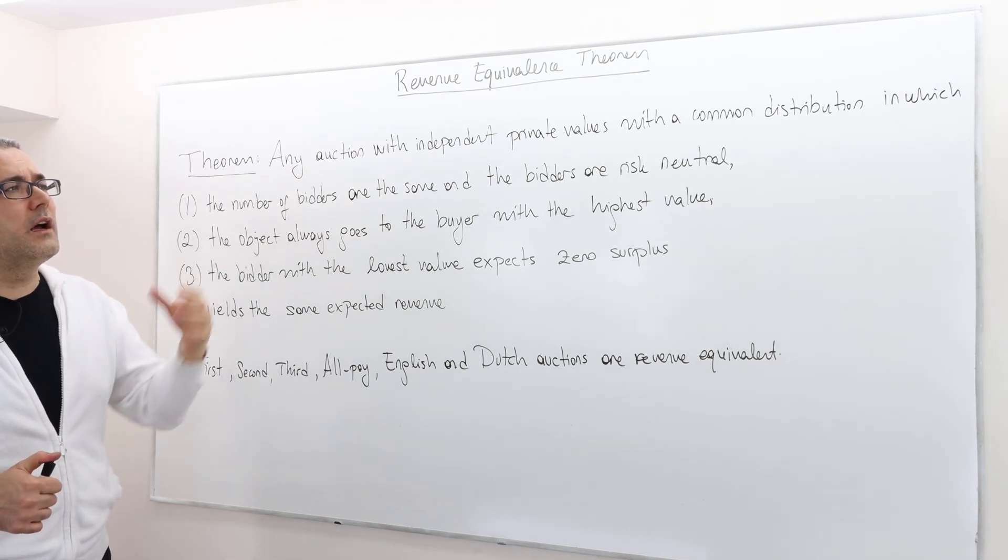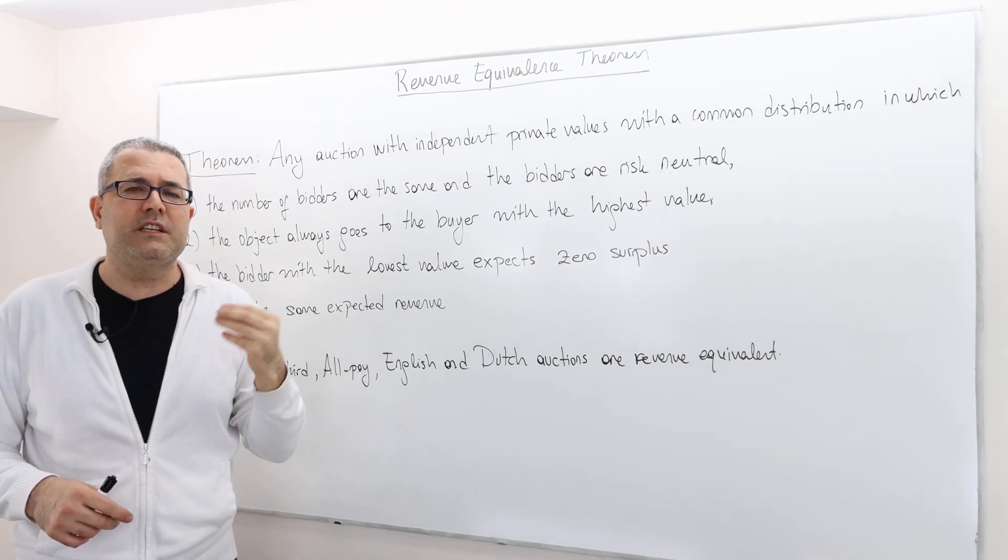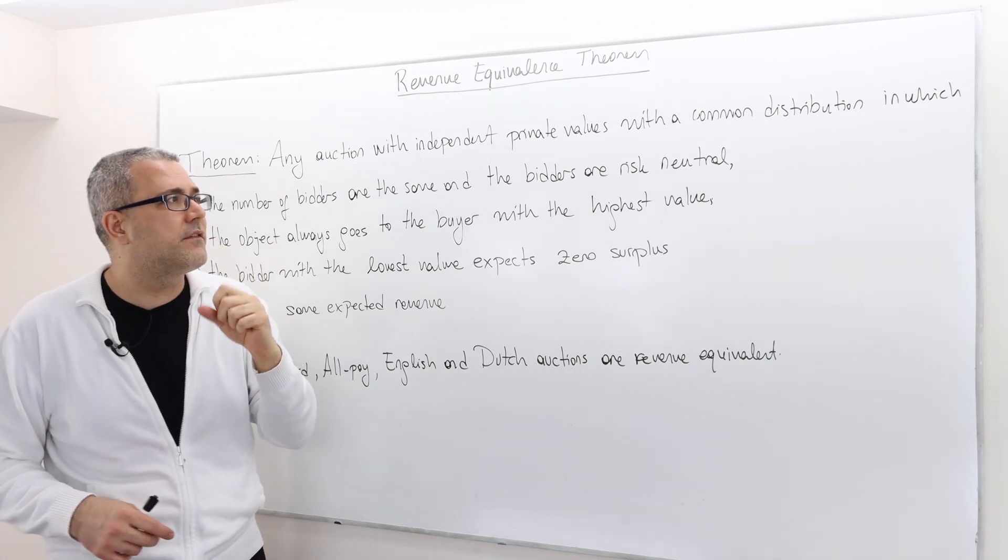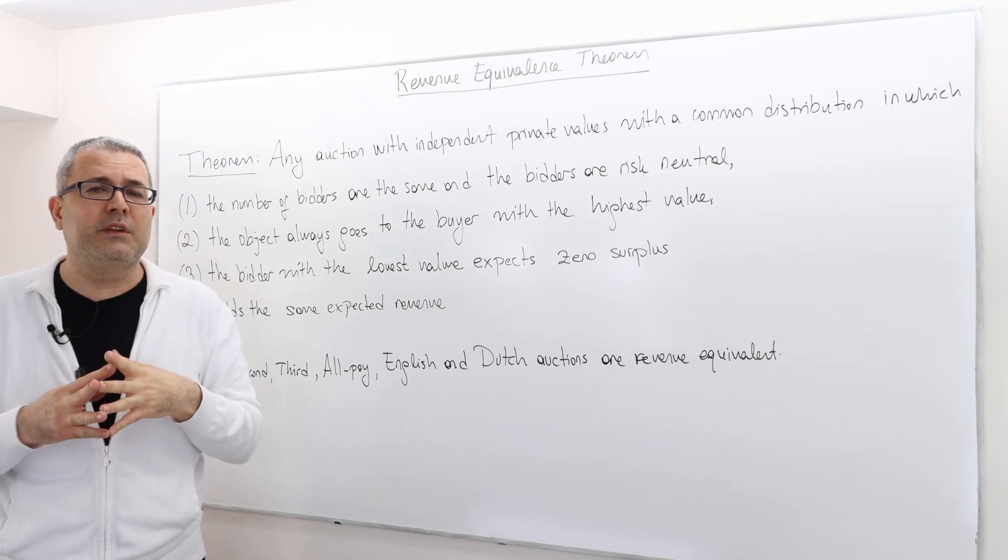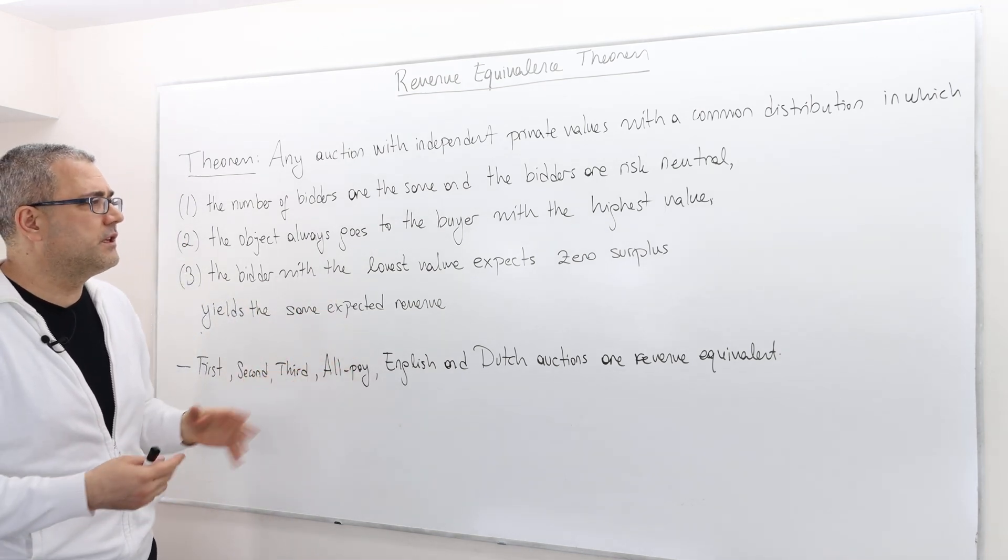The common distribution, meaning everybody receives his or her signal from the same probability distribution function F. Remember, the bidders are risk neutral. So if the bidders are risk averse, for example, this theorem is not true.